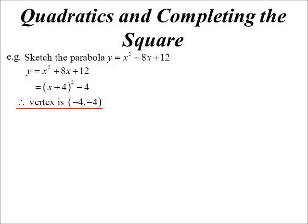I can look at that and say, hang on, I know the vertex is minus 4, minus 4. So having it in that form can find the vertex quite quickly.